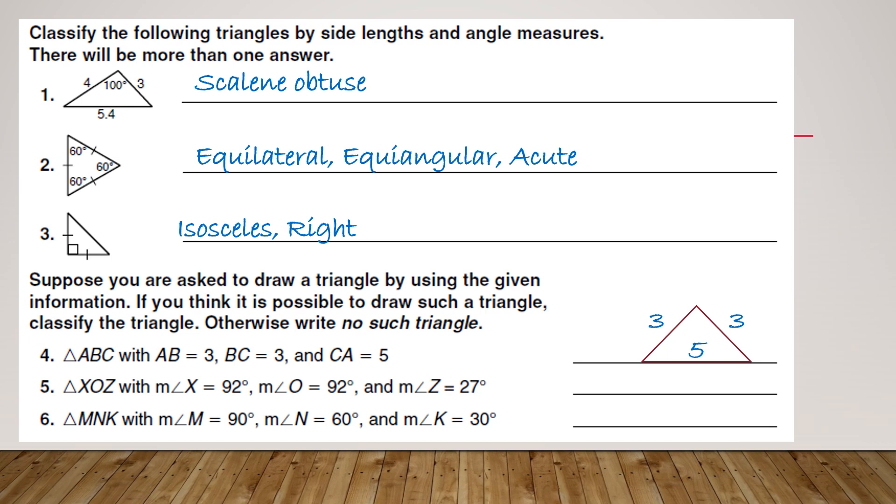In number five, it's a little bit different. They give me angle measures. You've got to think more into this. If you add all of those angles up, you get more than 180 because the two 92s alone are over 180. So no such triangle exists. You can never have more than one obtuse angle in a triangle.